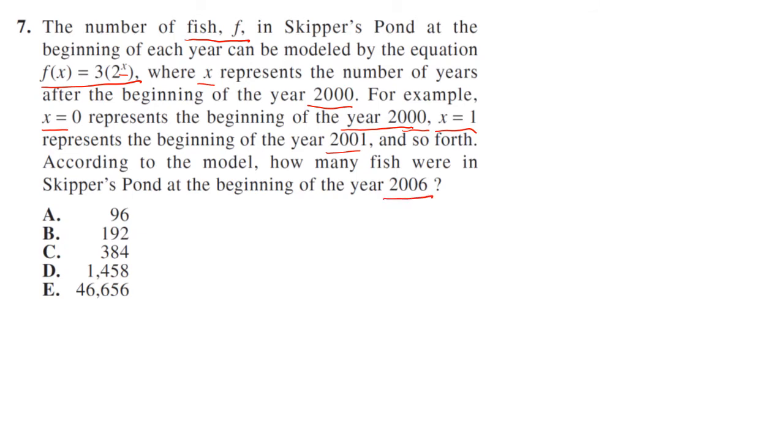So 2006 just means it's going to be x equals six. So using this equation, we have three times two to the sixth. And two to the sixth, you can do that on your calculator, so it's going to be 64. So three times 64 equals 192 or choice B.